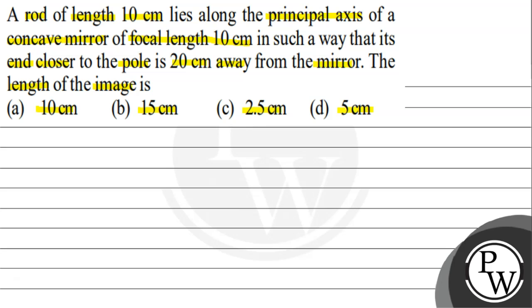First, let's understand what is given in the question. A rod is placed along the principal axis of a concave mirror. Its length is 10 centimeters. The focal length of the mirror is given. The end of the rod closer to the pole has a distance of 20 centimeters from the mirror. We need to find the length of the image.